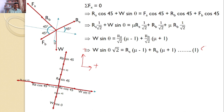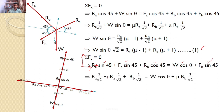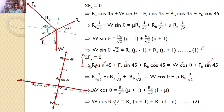Similarly, resolving all forces along the Y axis with sigma Fy equal to 0: the upward forces are RA sin45, FA sin45, and RB cos45, while the downward forces are W cos theta and FB sin45. Upon simplification, we get Equation 2: W cos theta times root 2 equals RA(mu plus 1) plus RB(1 minus mu).